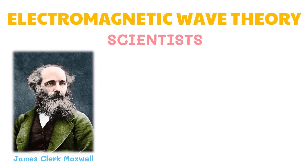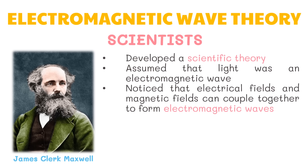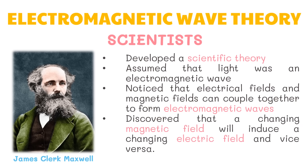Scientific understanding about the nature of electricity grew throughout the 18th and 19th centuries through the work of researchers. James Clerk Maxwell, an English scientist, developed a scientific theory to better explain electromagnetic waves. When Maxwell used field theory to assume that light was an electromagnetic wave and correctly deduced the finite velocity of light, it was a powerful logical argument for the existence of the electromagnetic force field. He noticed that electrical fields and magnetic fields can couple together to form electromagnetic waves, discovering that a changing magnetic field will induce a changing electric field and vice versa.